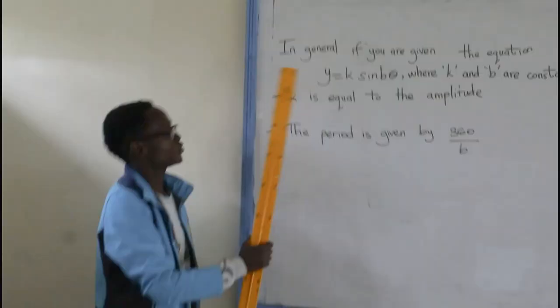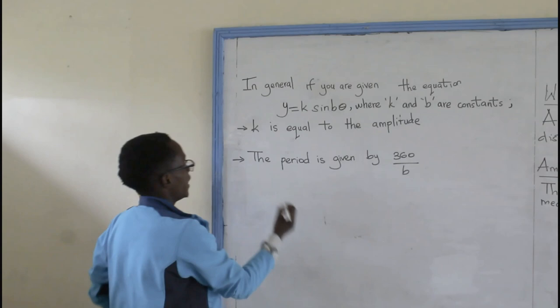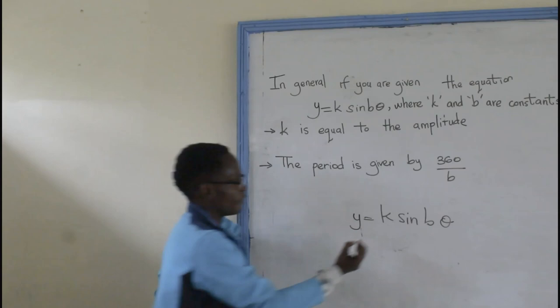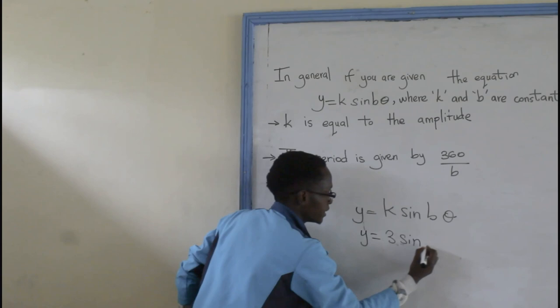So, in general, if you're given the equation, Y equals to K sine B theta, where K and B are constants. This means that the value of K you might find that Y equals to 3 sine 2 theta.